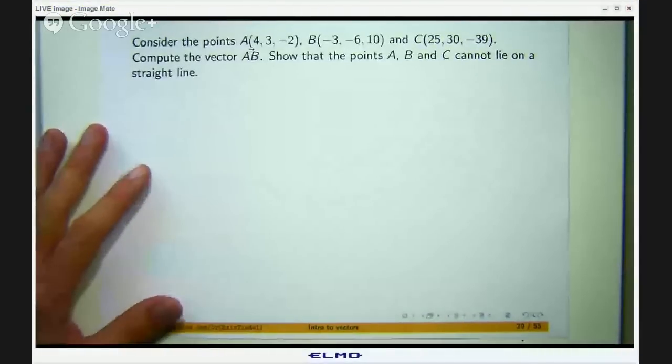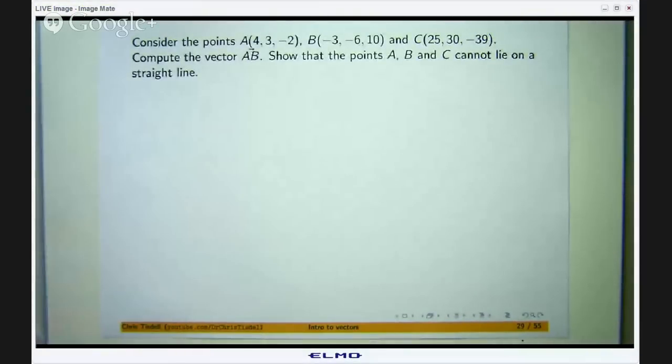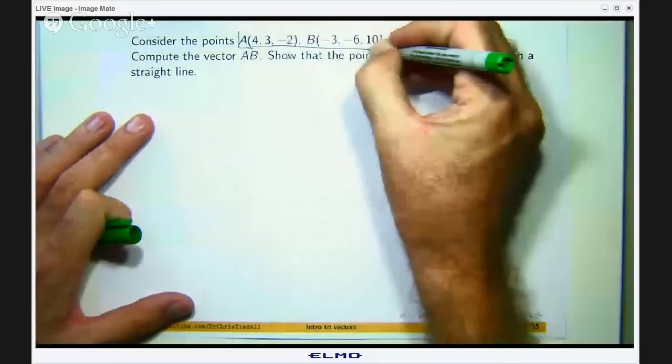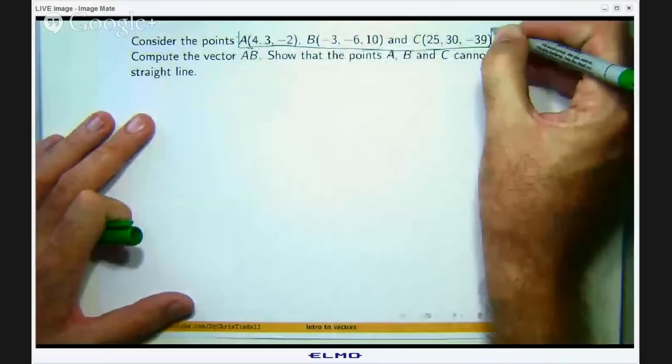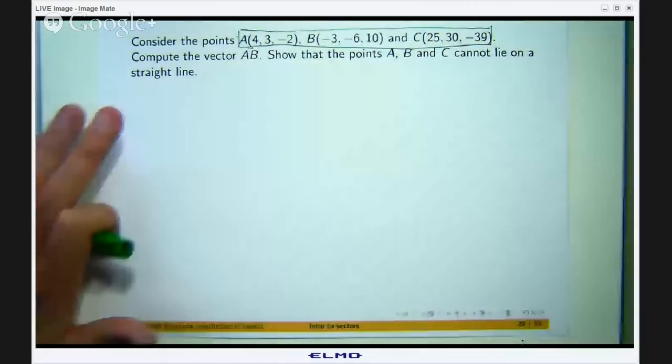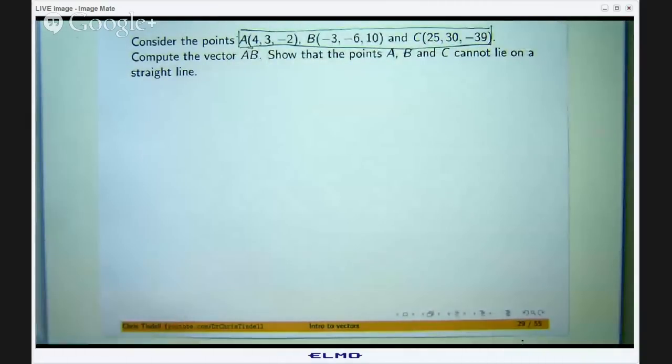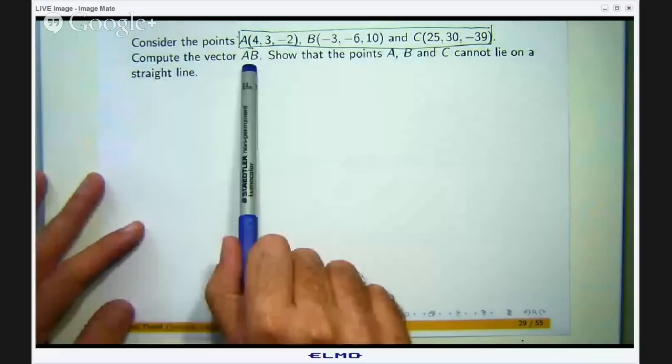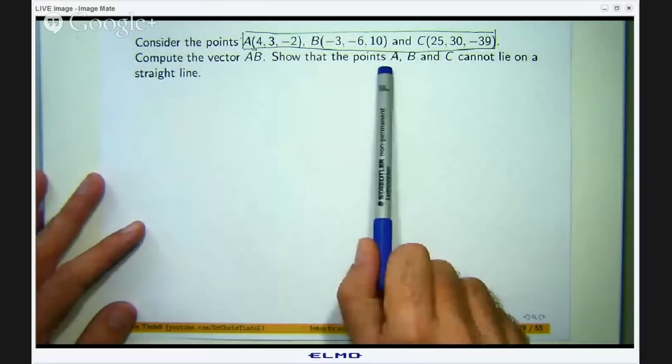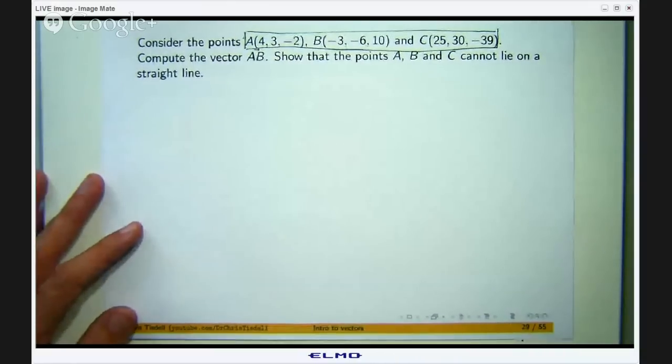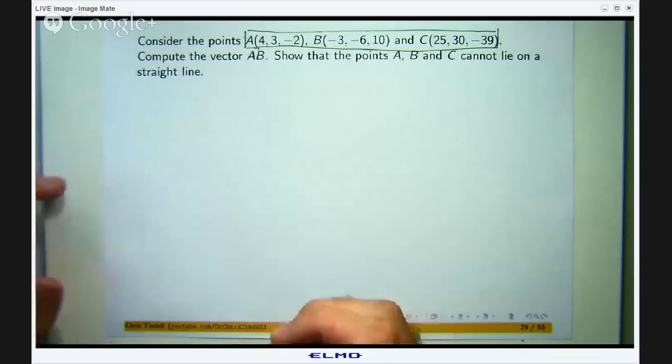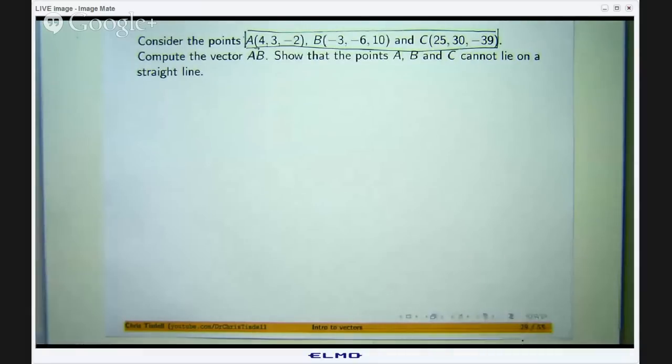Alright, so here is the example I am going to discuss. Consider the points A, B and C all lying in three dimensional space. We are asked to compute the vector from point A to point B and then we are asked to show that the points A, B and C cannot lie on the same straight line. In other words, A, B and C are not collinear.